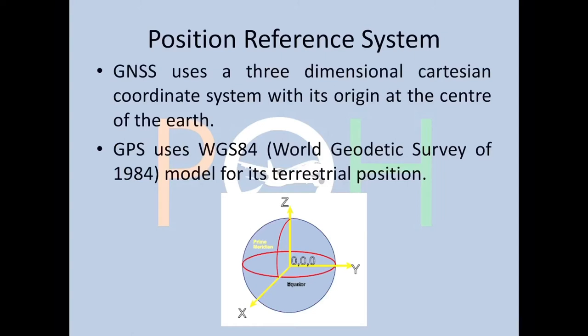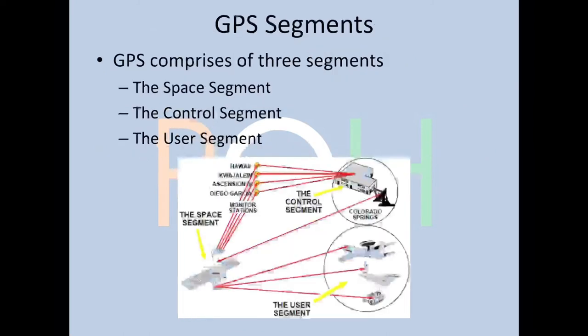GNSS uses a three-dimensional Cartesian coordinate system with its origin at the center of the Earth, as you can see in the diagram. We assume the Earth is a sphere — of course it's actually a spheroid, but that's good enough for calculation purposes. GPS uses WGS 84, which is the World Geodetic Survey of 1984 model, for its terrestrial position. In this video we shall be majorly discussing GPS.